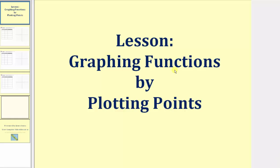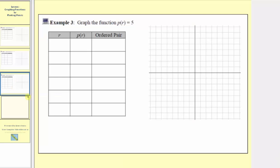Welcome to part three of the lesson on graphing functions by plotting points. In example three, we're asked to graph the function p of r equals five. This is called a constant function because for any input r, the output is always the constant five.